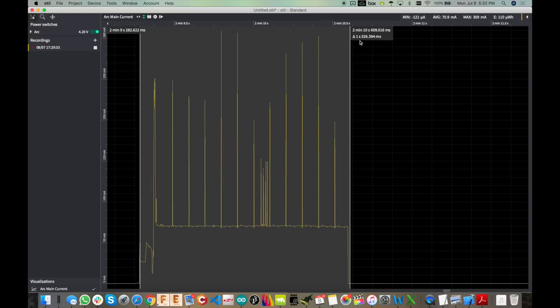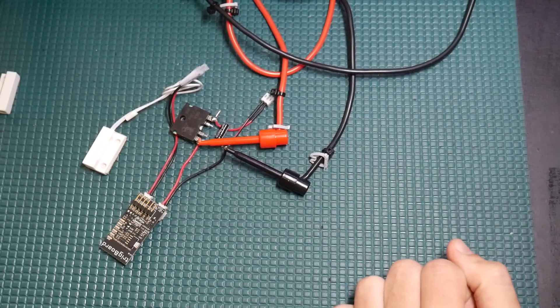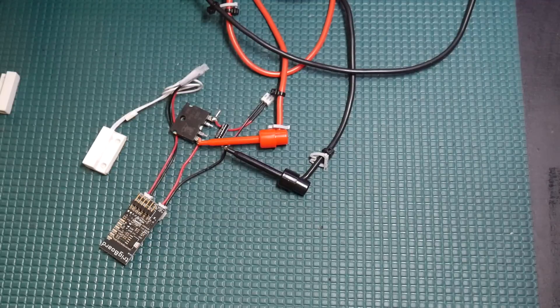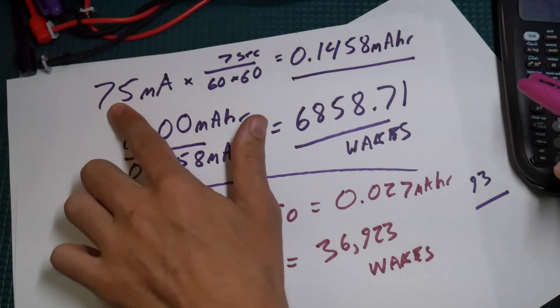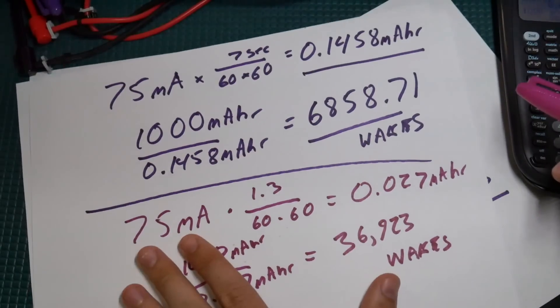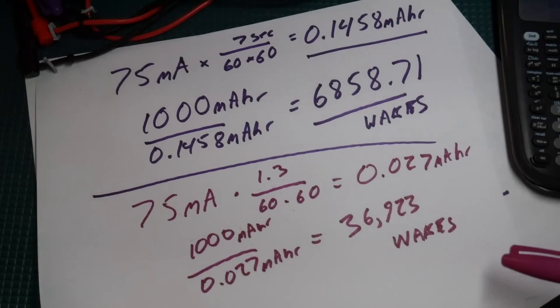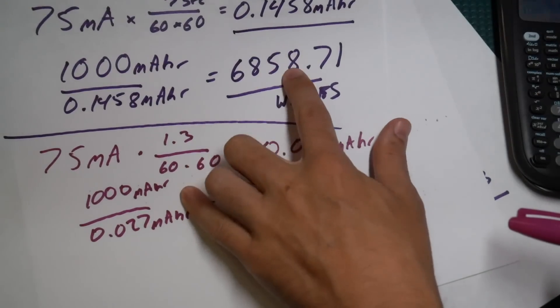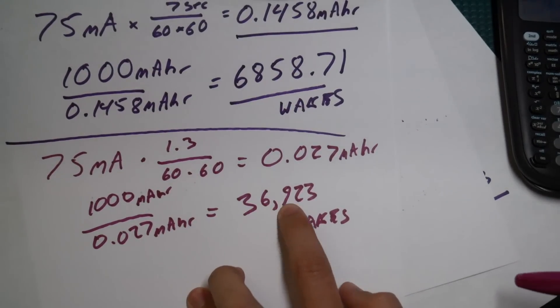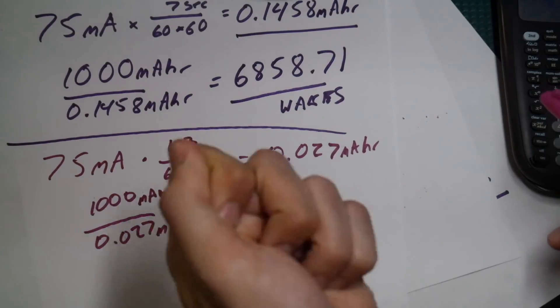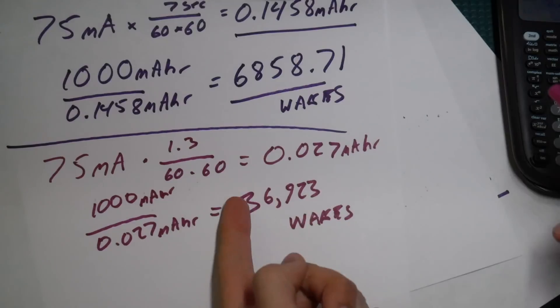You remember it was about seven seconds before? Well now 1.3 seconds is all that's needed for it to wake up and get its message out. So now we're still at 75 milliamps. I just ran the numbers again - you remember this before with the seven second wake? Now with the 1.3 second wake, instead of 6,858 wakes we're at 36,923 wakes.